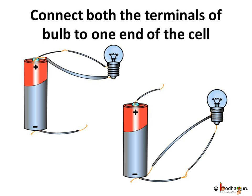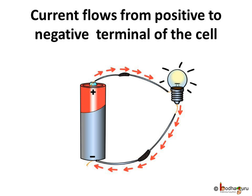What if we connect both the terminals of the bulb with one end of the cell only? That is, either both terminals to the positive terminal or both terminals to the negative terminal of the cell — would the bulb glow? It seems like it should glow because there is a closed or complete path visible. But the bulb won't glow in either case, and there is a valid reason for it. Current flows in a fixed direction. In the case of a cell, the current flows from the positive end to the negative end. So we need to provide a path between the positive and the negative end of the cell in order for current to flow through it.